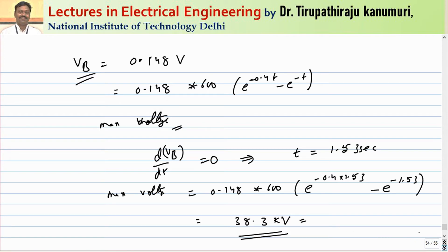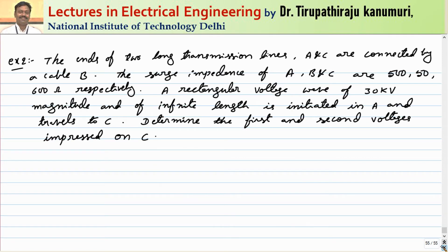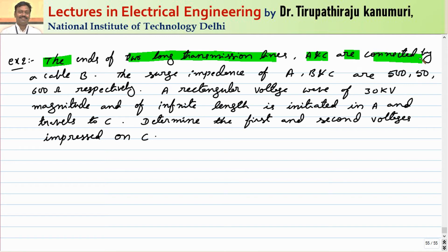So even though the applied voltage is 600 V, the maximum voltage at the transformer is only 38.3 kV — that is the advantage of a surge arrestor. Now let us take another example, which will motivate why we need the lattice diagram. The ends of two long transmission lines A and C are connected by a cable B.